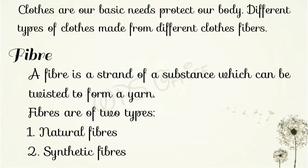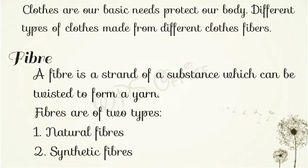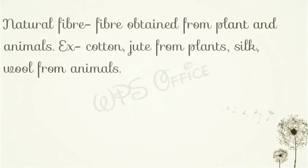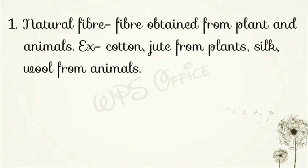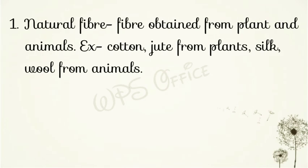Fibers are of two types — रेशे दो प्रकार के होते हैं: natural fiber और synthetic fiber. Natural fiber means fibers obtained from plants and animals. For example, cotton and jute from plants, and silk and wool from animals.